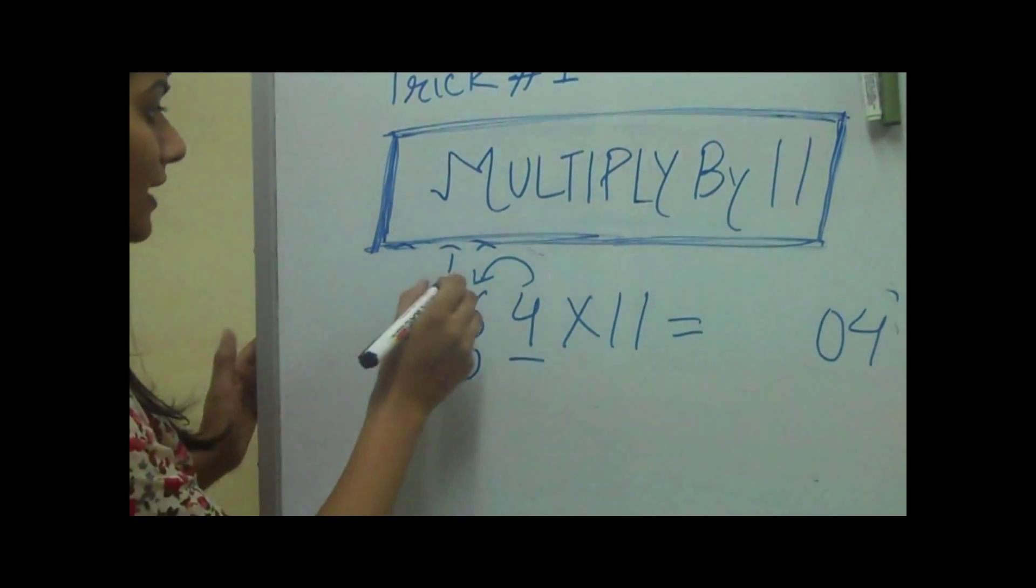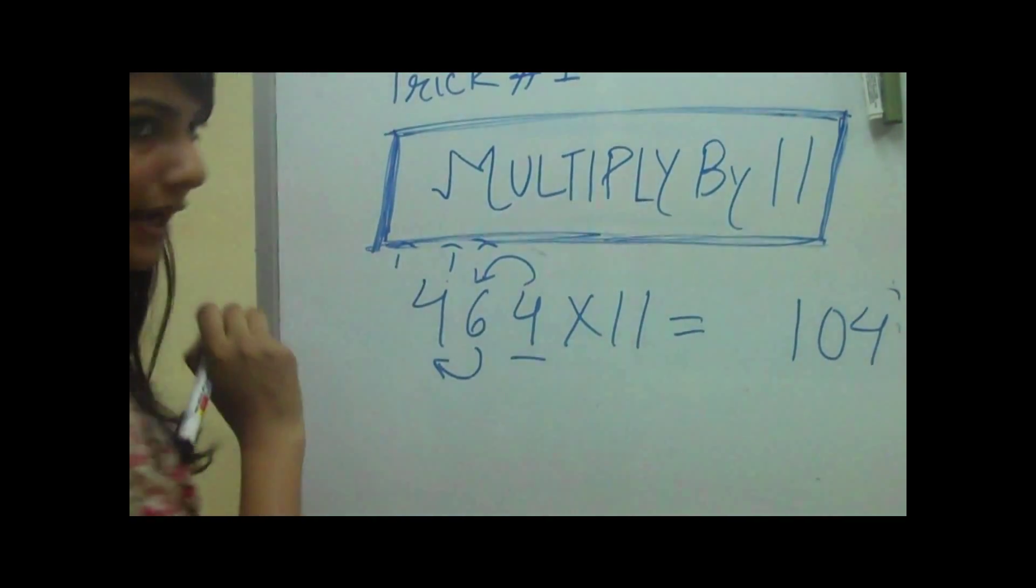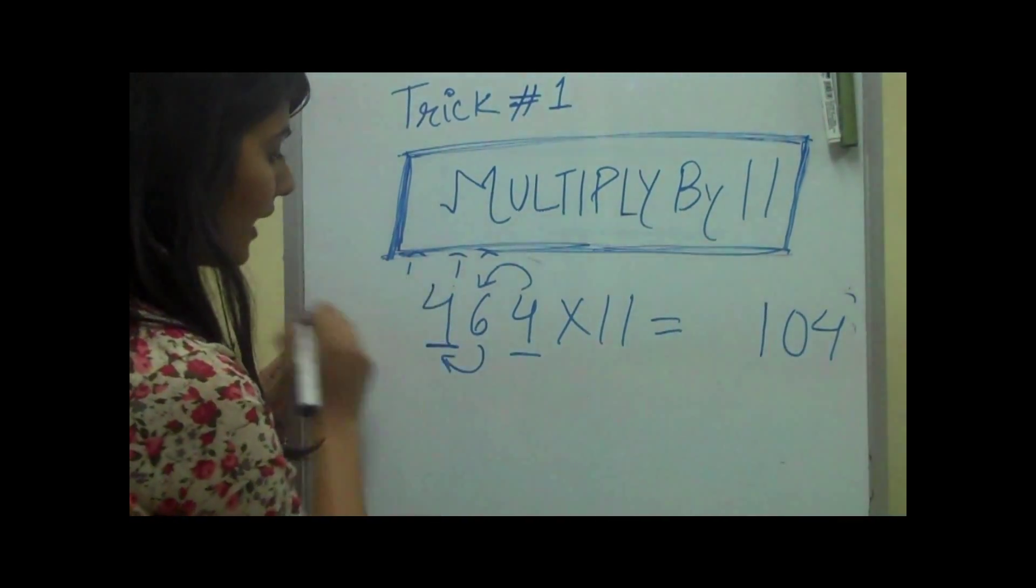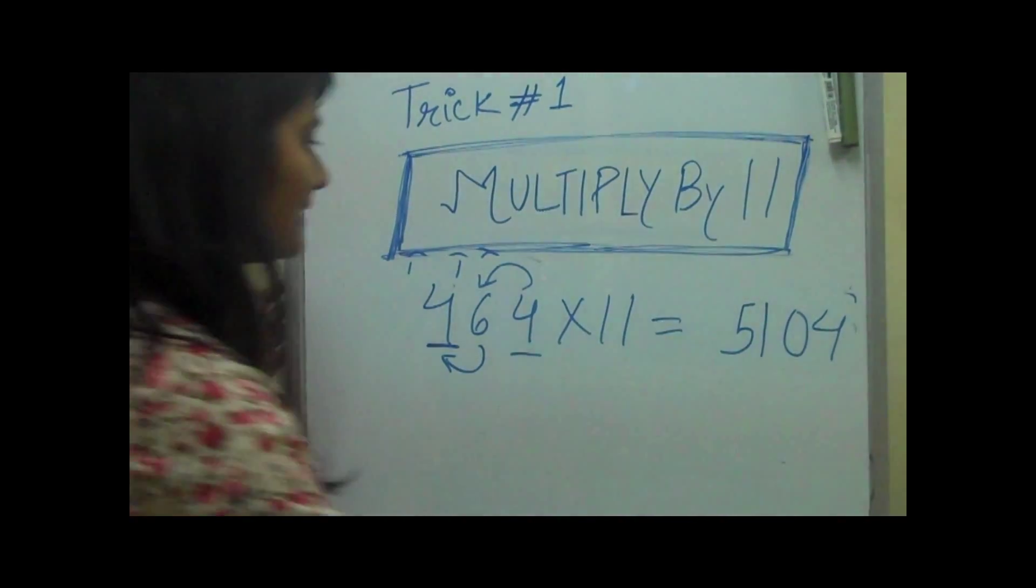And plus 1 which is the carry, equals 11. Then we'll put 1 here and put 1 again as carry. And then add this number to this carry which becomes 5, 1, 4, 0. It's that simple. Let's take another example.